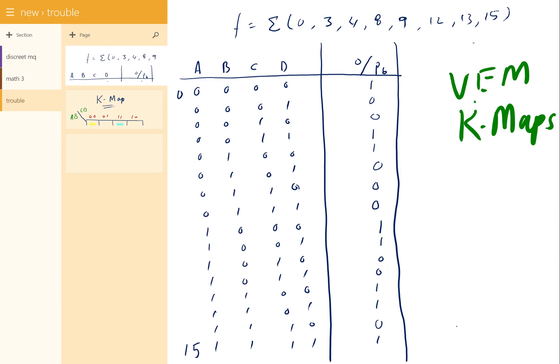Today, I'm going to be teaching you variable entered K-Maps or VEMKMaps. The question is, what are VEMKMaps? VEMKMaps are basically K-Maps, but they are a much more simplified version of K-Maps. How are they simplified?